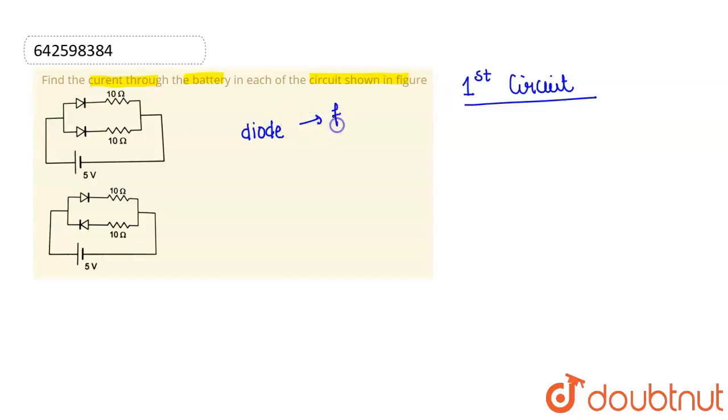What I see is that the positive terminal of the battery is connected with P junction of each diode and the negative terminal is connected with each terminal of negative diode.